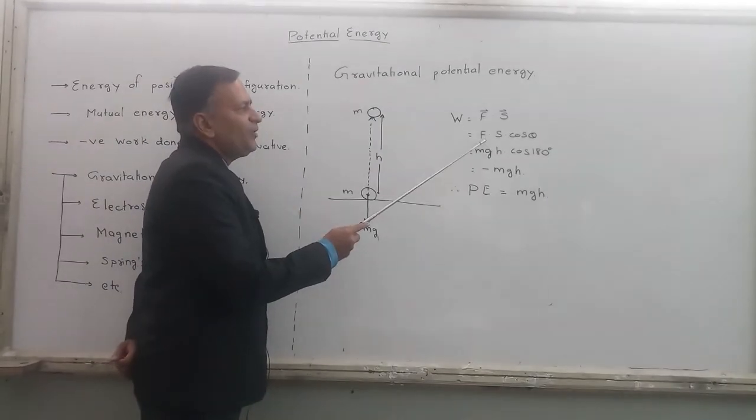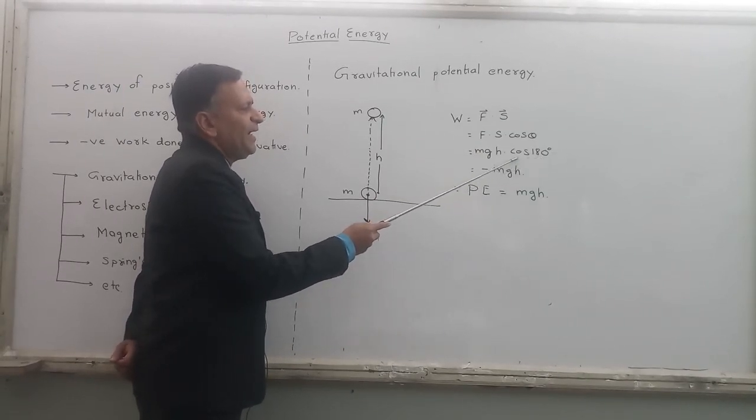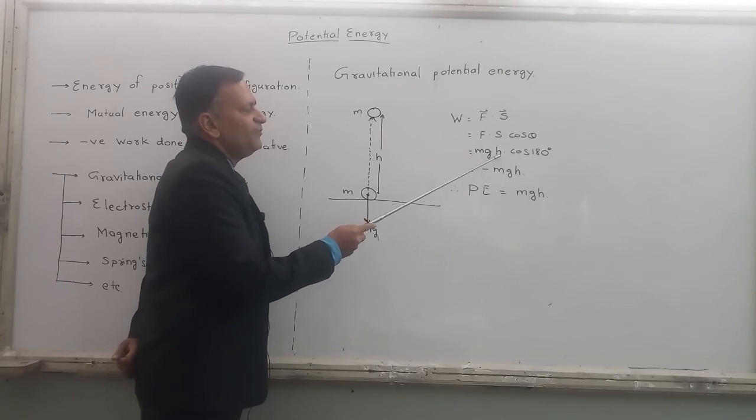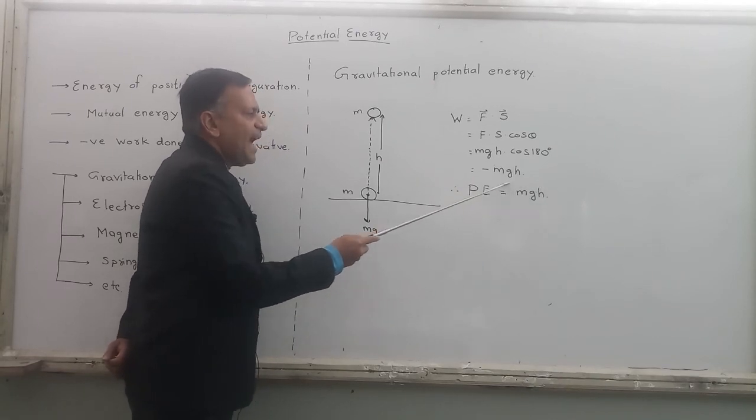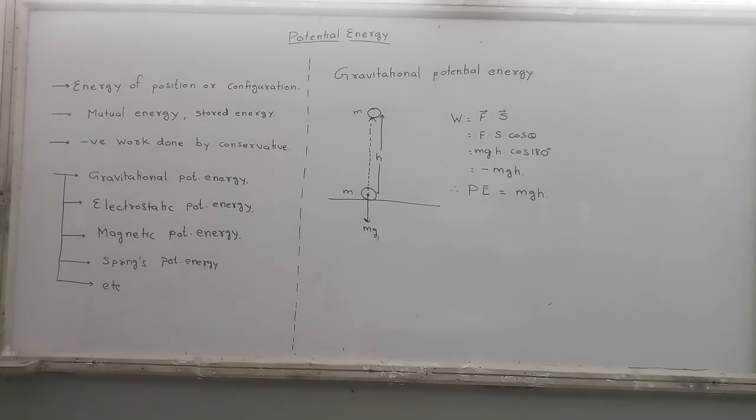So the angle between force and displacement is 180. Cos 180 is minus 1. Gravitational force is m into g. Displacement of the body is h. So this gives me minus mgh. Therefore, potential energy or gravitational potential energy of this body is equal to mgh.